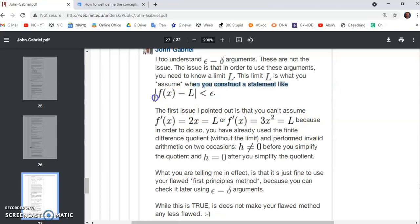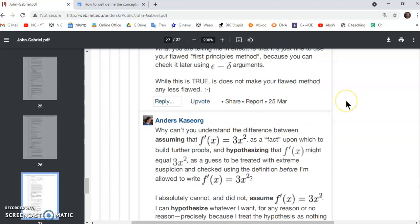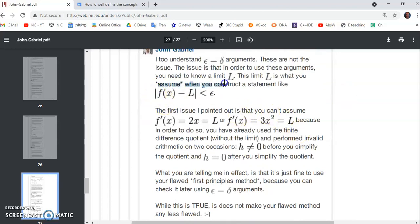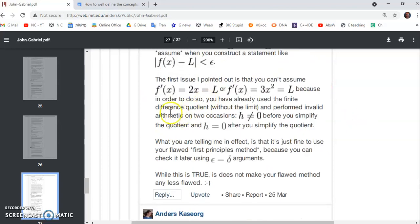So the denouement comes at this point where I said to Kaseorg, I too understand mainstream arguments. That wasn't the issue. But to use a construct like you see here, f(x) minus L, you need to know L. And as I pointed out to this poor moron Anders Kaseorg, you cannot find L without guessing it or through an invalid method called the first principles method.